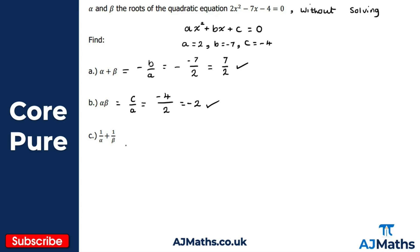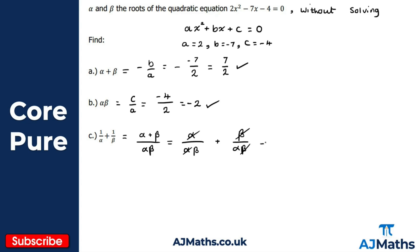For part c, we need the sum of the reciprocals: one over alpha plus one over beta. We manipulate alpha plus beta and alpha beta to get this. Taking (alpha plus beta) divided by (alpha beta) and splitting into two fractions gives alpha over alpha beta plus beta over alpha beta, which simplifies by cancellation to one over beta plus one over alpha — that is, one over alpha plus one over beta.